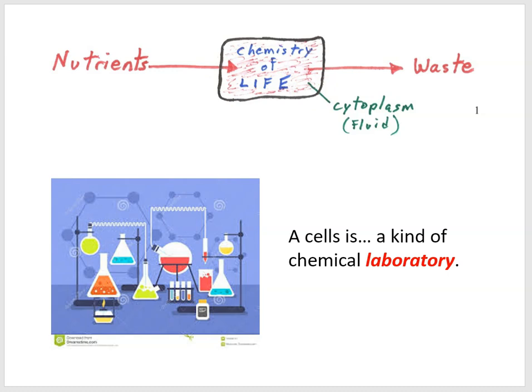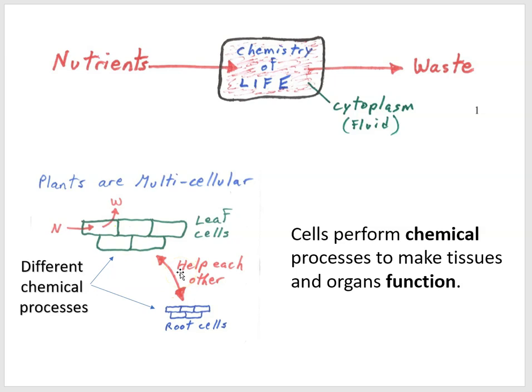Thinking back to Schleiden, the botanist who discovered plants were multicellular, he pointed out that cells of a plant had different appearances under the microscope — they seemed to be doing different jobs, different functions. People like Dutruchet argued that cells appearing to do different jobs were perhaps performing different chemical reactions within their boundaries.